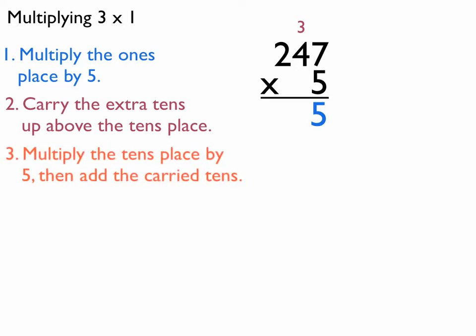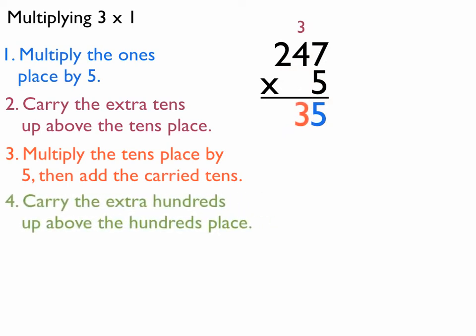Next, I multiply the tens place by 5, then add the carried tens. 5 times 4 is 20, plus 3 makes 23. I put the 3 right there and carry the extra hundreds up above the hundreds place. Since it was 23, that's going to be the 2.